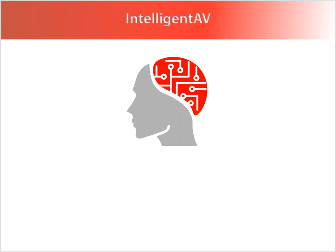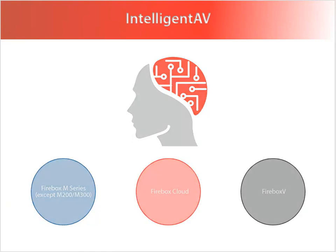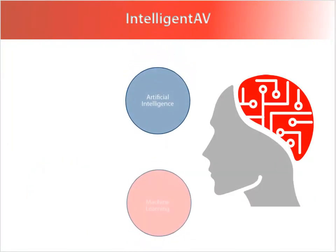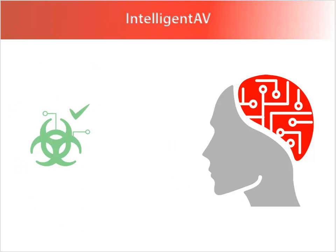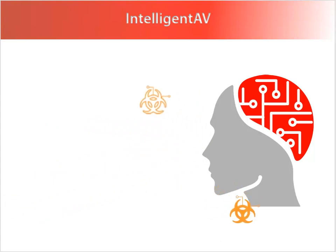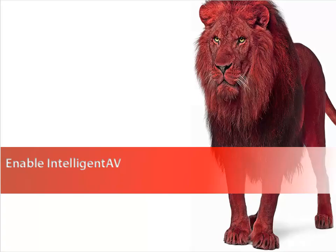To add another layer of protection to Gateway AV, you can enable the Intelligent AV service, which is available on the latest generation of M-Series devices, Firebox Cloud, and Firebox V. Intelligent AV uses artificial intelligence and machine learning to provide protection against evolving malware. Intelligent AV is trained to identify threats by examining millions of files for characteristics of malicious intent. The result is a series of algorithms that can determine whether a file is safe to run before it's executed.